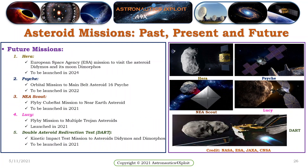Future missions include Hera, a European Space Agency mission to visit asteroid Didymos and its moon Dimorphos, to be launched in 2024. Psyche is an orbiting mission to main belt asteroid 16 Psyche, to be launched in 2022. NEA Scout is a flyby CubeSat mission to near-Earth asteroids, to be launched in 2021. Lucy is a flyby mission to multiple Trojan asteroids, to be launched in 2021. DART, the Double Asteroid Redirection Test, is a kinetic impact test mission to asteroid Didymos and Dimorphos, to be launched in 2021.